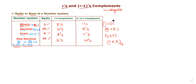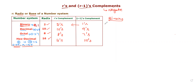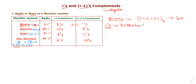Let us study each complement method one by one, starting with binary. For binary, we first find the 1's complement, then we can find the 2's complement. Similarly, 9's complement leads to 10's complement, 7's complement to 8's complement, and 15's complement to 16's complement. For binary, take the given number 1 1 0 1 0 1. To find the 1's complement, we negate each bit. The 1's complement is 0 0 1 0 1 0 with base 2.